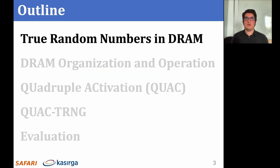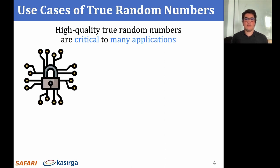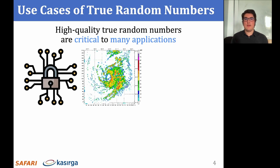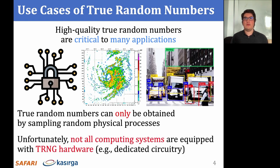Here is an outline of this talk. I'll briefly discuss why we need DRAM-based true random number generation in current computing systems. High-quality true random number generation is critical to many applications, such as cryptography, scientific simulations, and machine learning. True random numbers can only be obtained by sampling random physical processes, and unfortunately, not all computing systems are equipped with dedicated TRNG hardware. This greatly limits the application space supported by these systems and weakens the security guarantees provided by such systems.